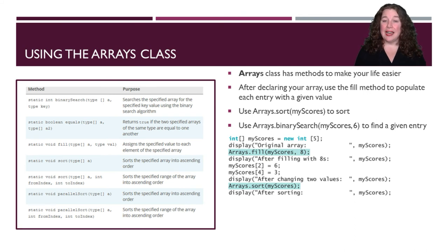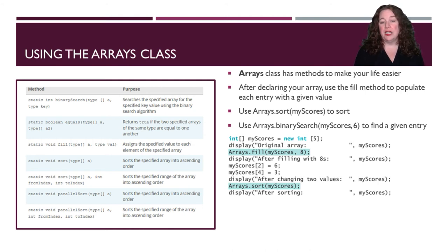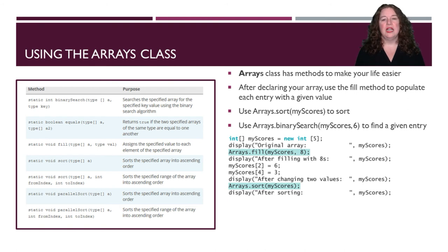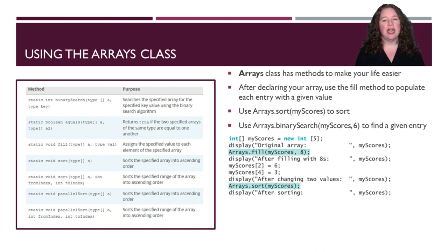There is an Arrays class with some useful methods. Using the Arrays class, we can fill values, sort, and check equals between two arrays. When you use Arrays.sort on a list of integers, it works fine since it's a primitive type. If you want to sort a class type, you'll need to provide a comparator. You can also do a binary search with the Arrays class to efficiently find a specific entry, or fill an entire array with a certain value.